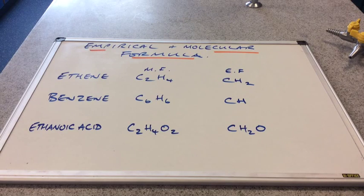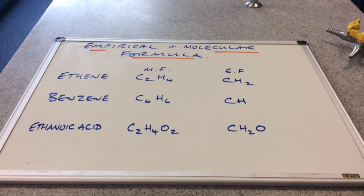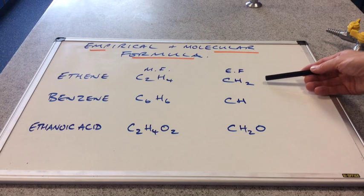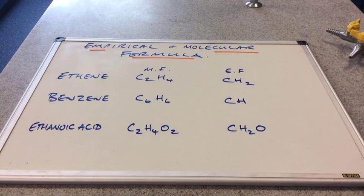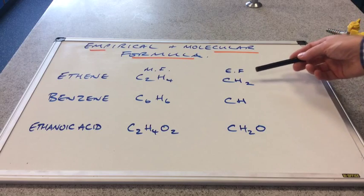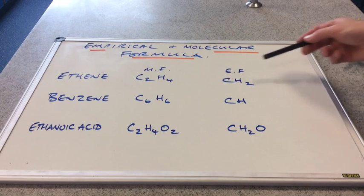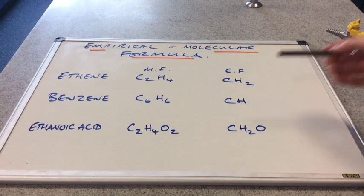So if you have a look at the empirical formula column, can you see what's meant by empirical formula before I tell you? So it looks like it's a simplified formula. What we've actually done is we've found the simplest whole number ratio of each of the atoms in the molecule. So in ethane, with its two carbons and four hydrogens, the actual simplest ratio is CH2. So for every carbon, there's two hydrogens. Benzene, for every carbon, there's one hydrogen.